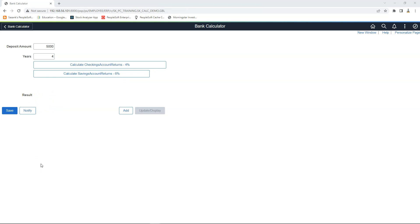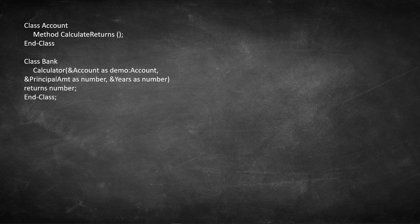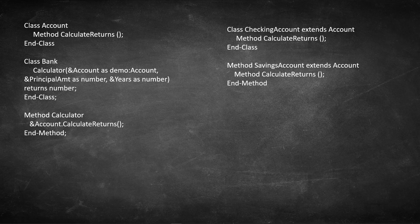Now I will go back to the drawing board and show you how I plan to design a solution for this problem. First, we are going to create a class called Account, which is a base or parent class for checkings and savings account classes. Then I am going to create a driver class called Bank, which contains a Calculator method. Calculator method takes account as input and returns the calculated value. Next, we'll create two separate classes derived from our account class — one is checkings account class and another is savings account class, each having their own method of calculating total returns.